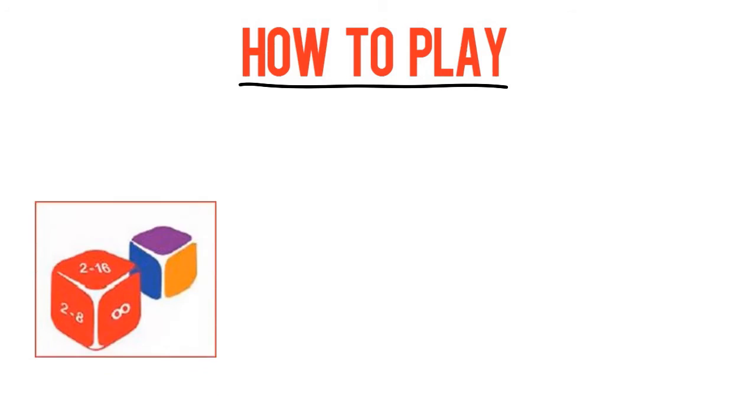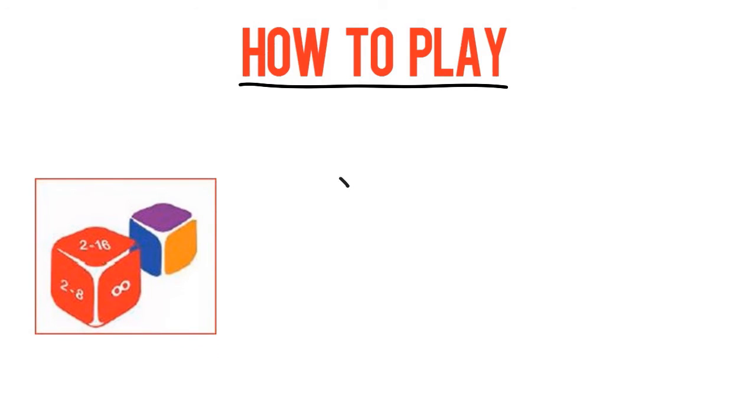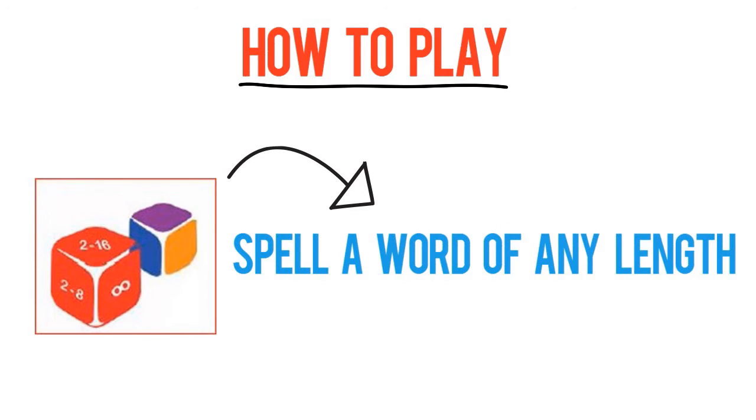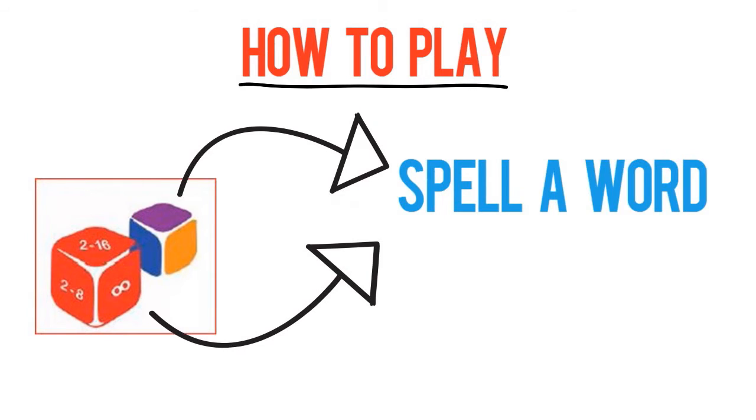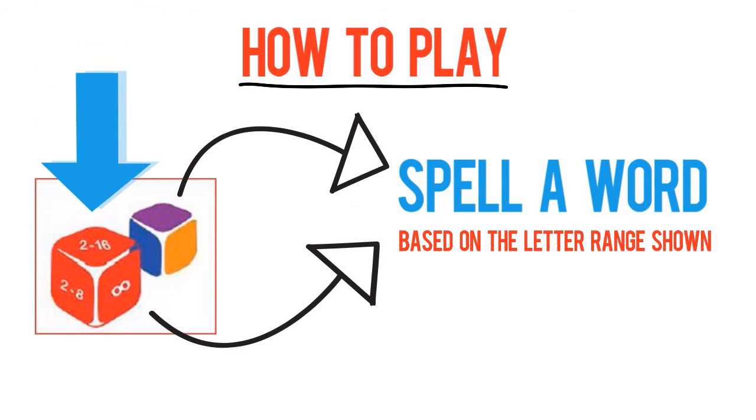How to Play: Before the game begins, players may decide to use only the colored dice to play the game. This allows players to spell a word of any length. If both the color and number dice are used, a player can only spell a word based on the letter range shown on the side facing up on the number die.